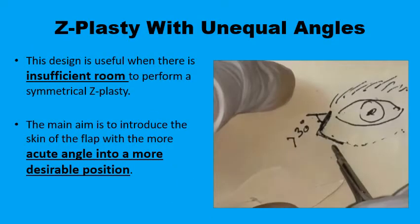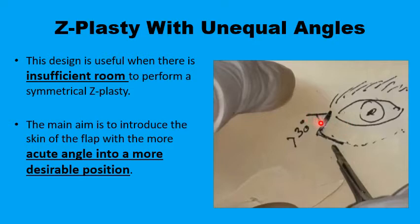There will be situations like this one, where you have a contracted scar quite close to the eye and affecting the eyelids. If you want to place one of the limbs of the Z-plasty in a relaxed skin tension line, it may not be possible to place the other limb in another relaxed skin tension line. Because of this, some variations to the standard Z-plasty technique may have to be considered, provided that you still have an angle that is not less than 30 degrees so as not to jeopardize the viability of the tip of the smaller flap. Then unequal angles may be considered.